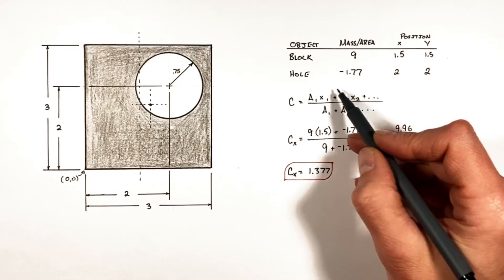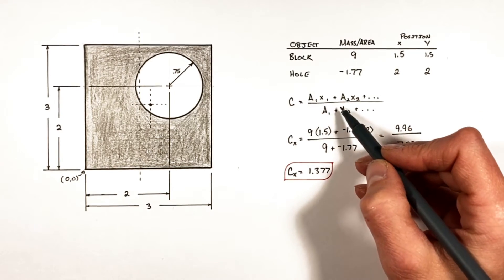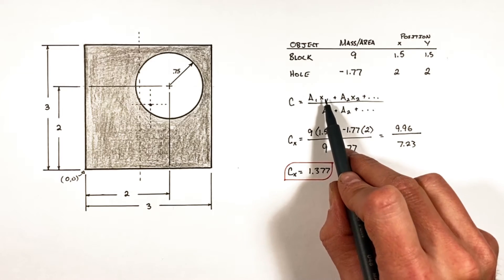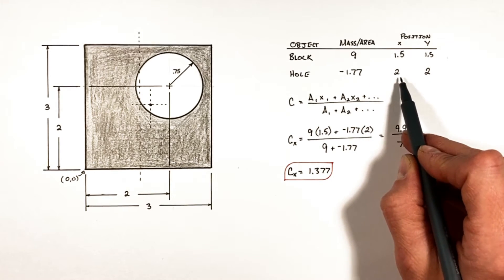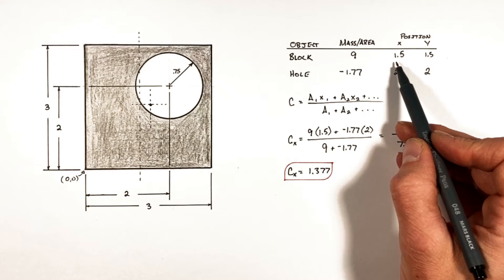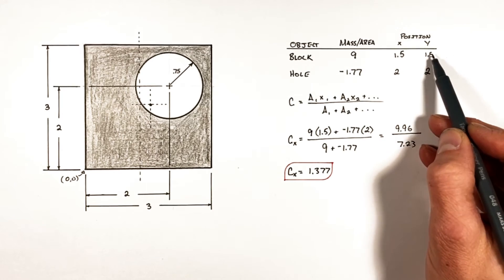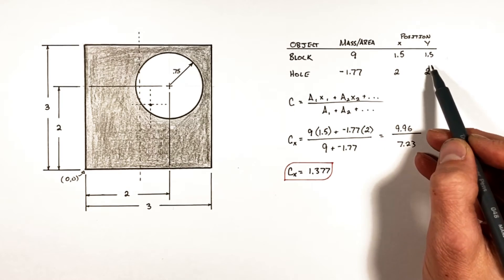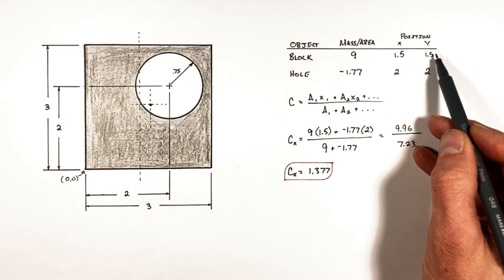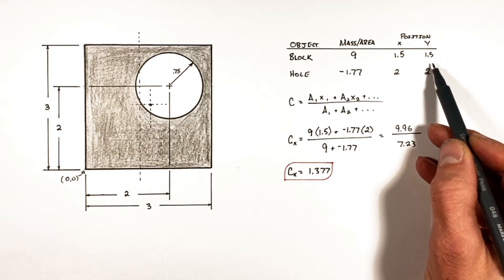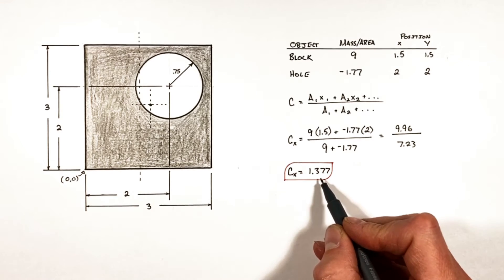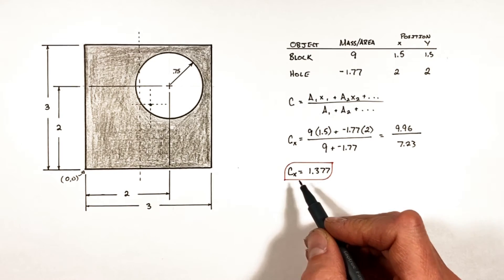We can do the same calculation using this equation for the vertical axis, except rather than plugging in our x values here, we can plug in the y values. But as you'll see, the horizontal and vertical positions for both of these objects are the same in both the x and y axis, which means if we plug in these y values to this equation, we're going to get the same value for the center of mass or area in the y-axis.